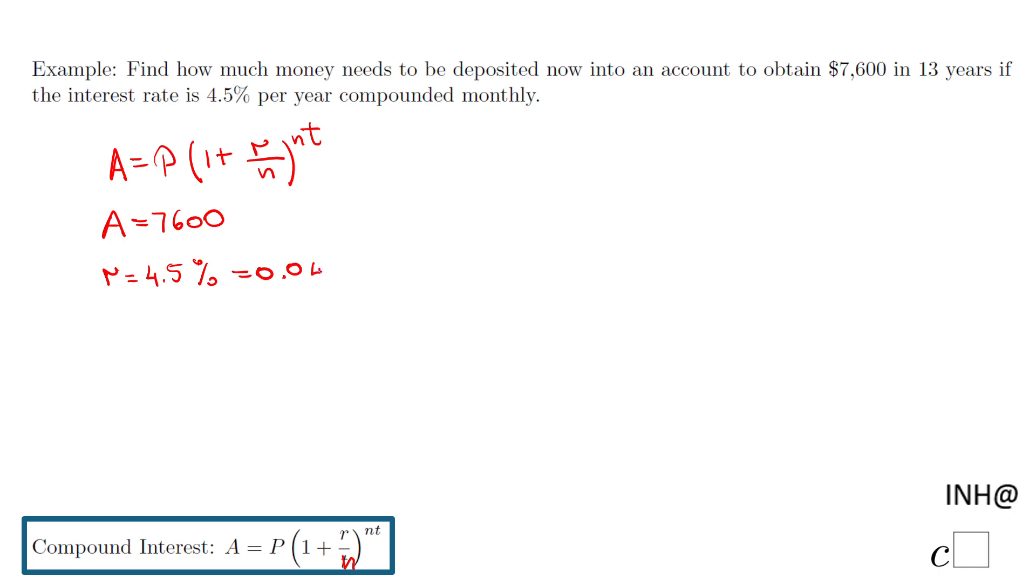And n is the number of times the math is done per year to calculate the interest. In this case it's calculated every month, so we have 12 months in a year, so that's the reason n is 12. And then t is 13, that we keep the money 13 years.